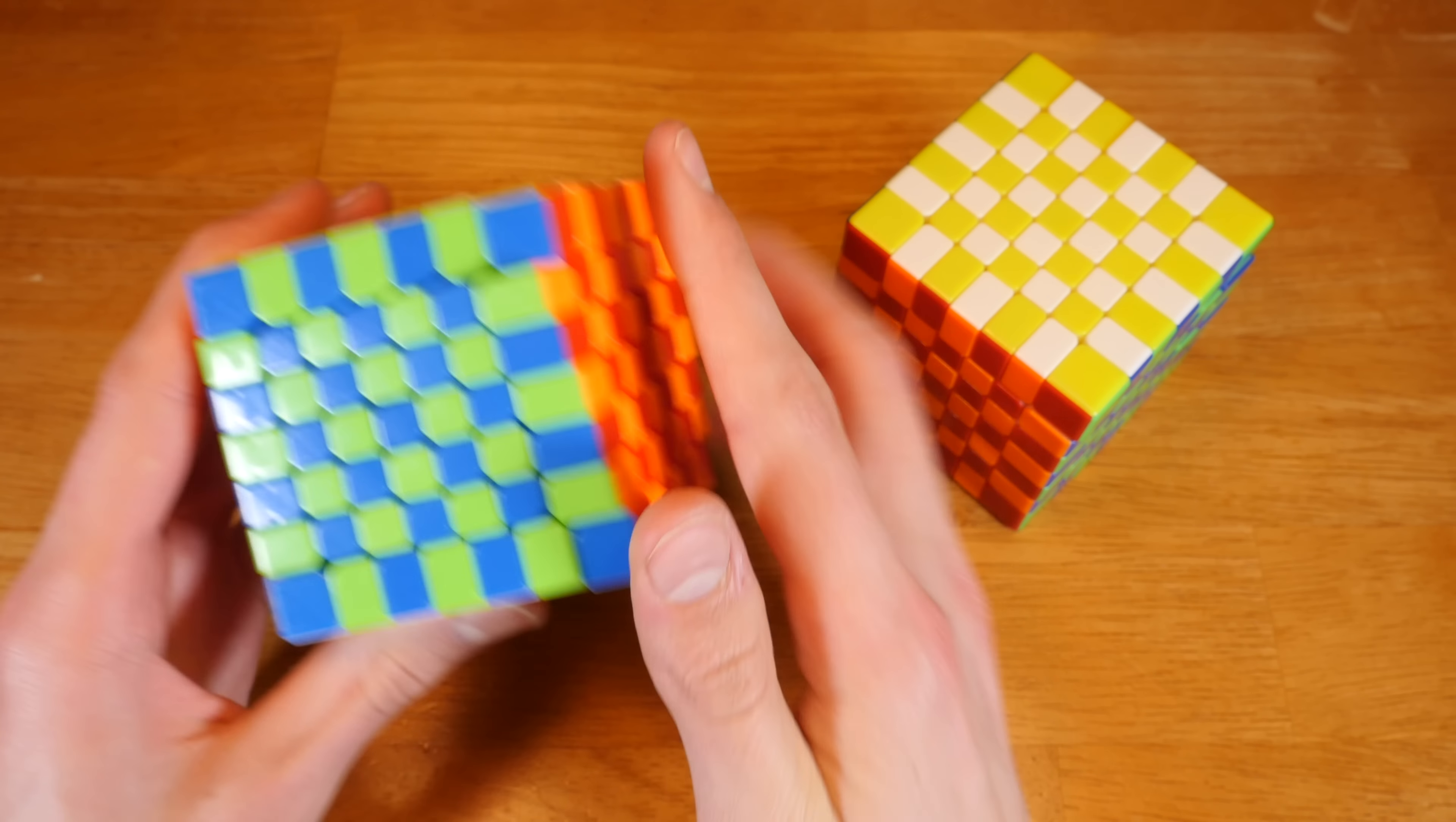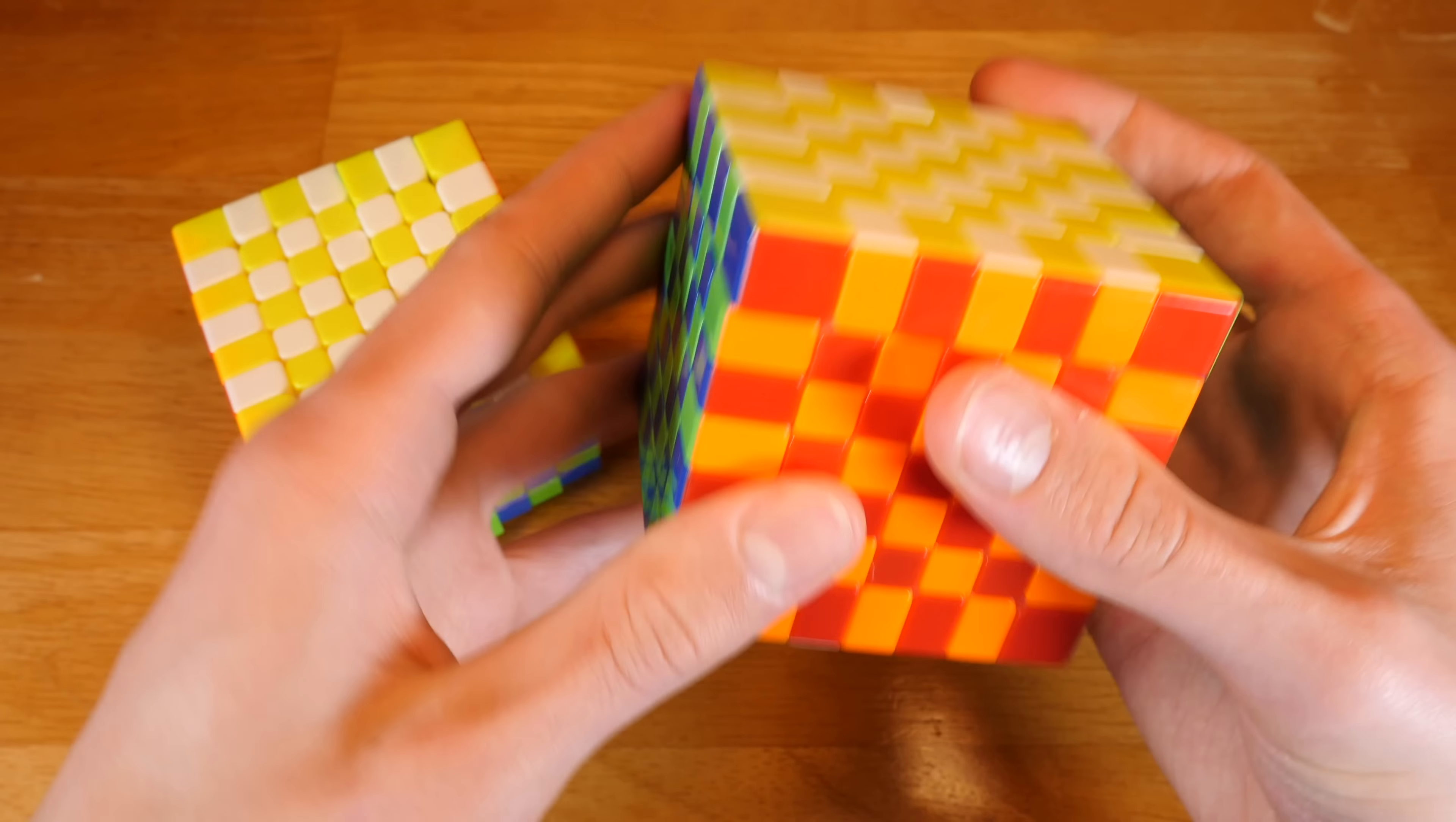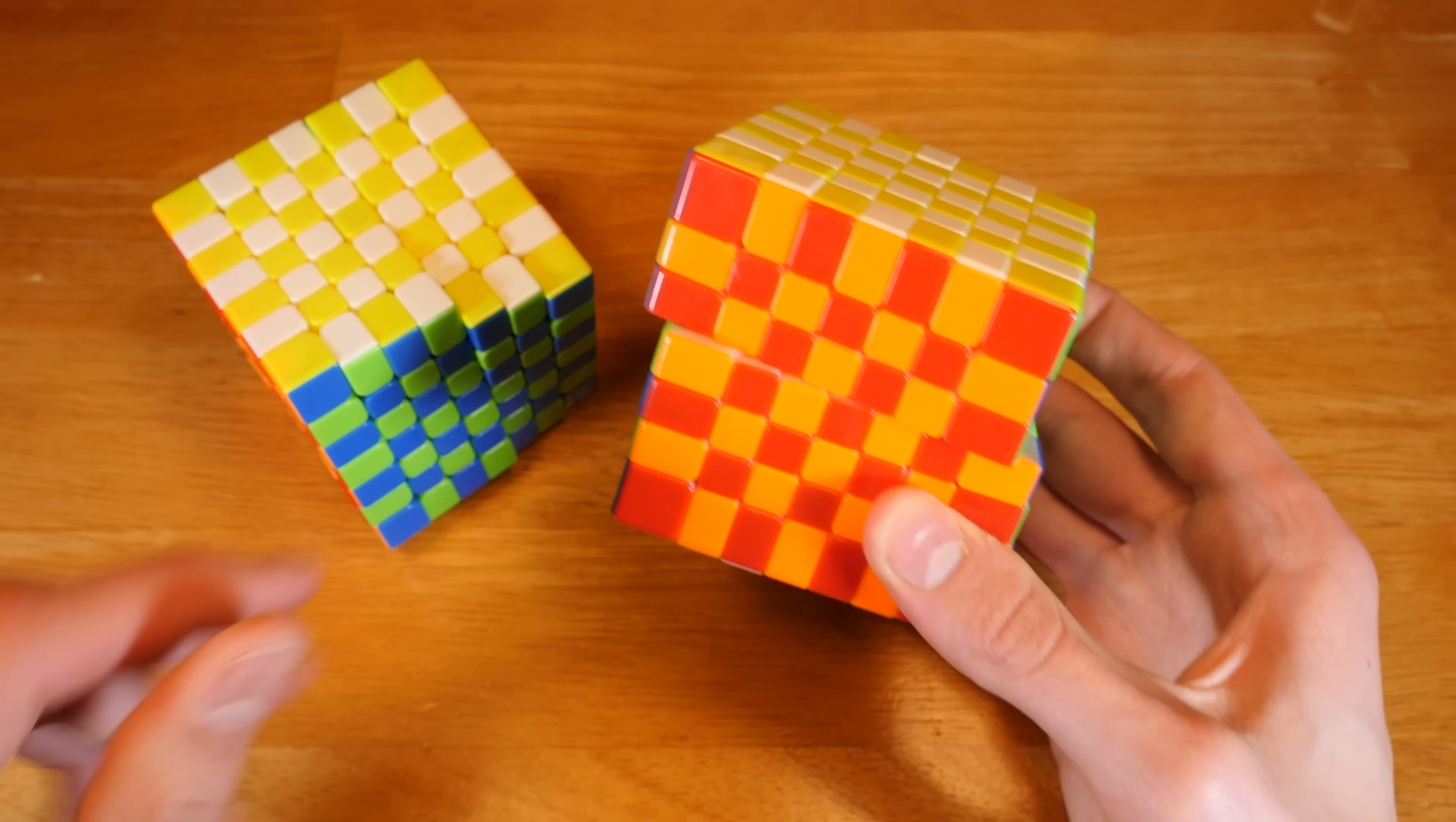The ChiChi has a bunch of holes in between the pieces. This does improve inner layer corner cutting, less lockups than something like this where there are more of those lockups on the very square pieces of the Yuxin.